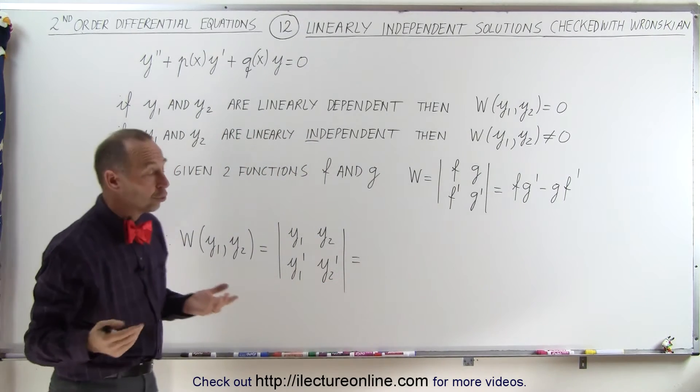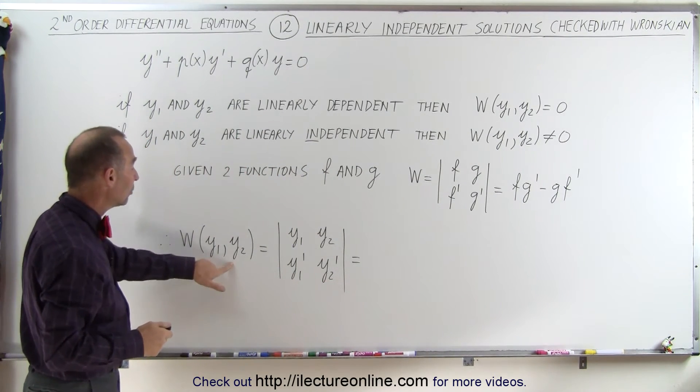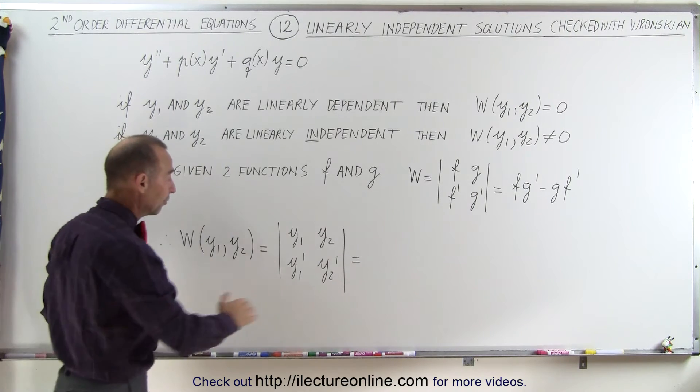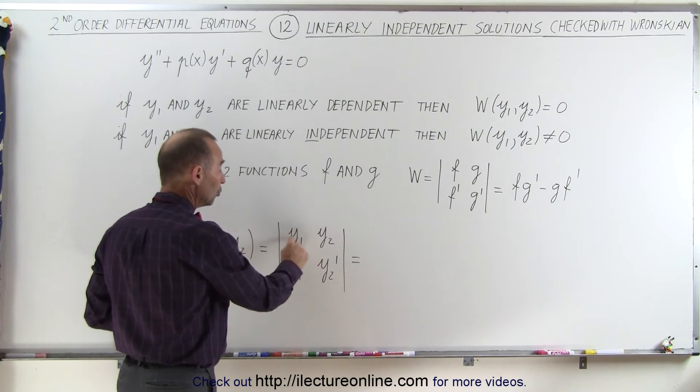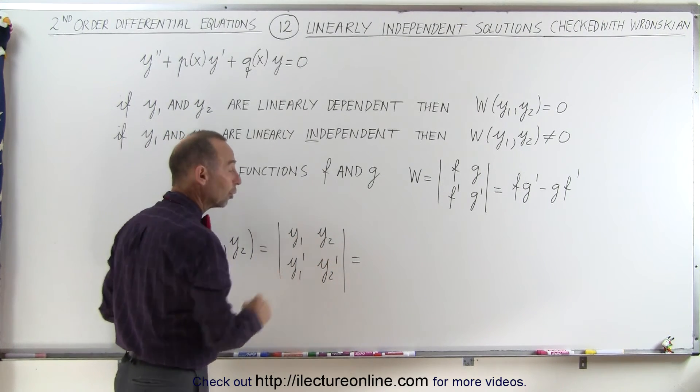Going back to our two solutions to the differential equation, the Wronskian of y1 and y2 can be found by taking first, on the first row, the two solutions to the equation, y1 and y2, and then on the second row, the derivatives of those two solutions.